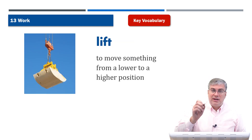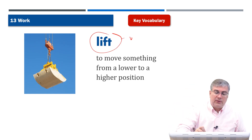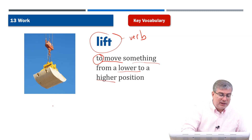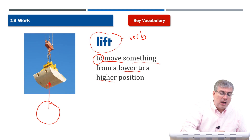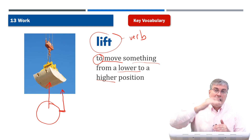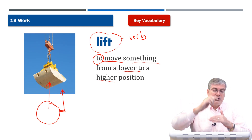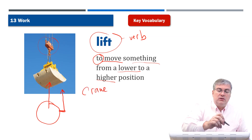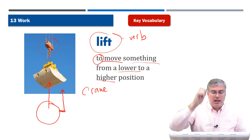Next we have lift. A pulley makes it easier to lift heavy objects. Lift here is a verb, and it means to move something from a lower position to a higher position. So if you have something down here and you lift it up, you're moving it from a lower position to a higher position. This looks like it's on a crane — crane, c-r-a-n-e — which is attached to a pulley on the crane, and they're lifting it up.